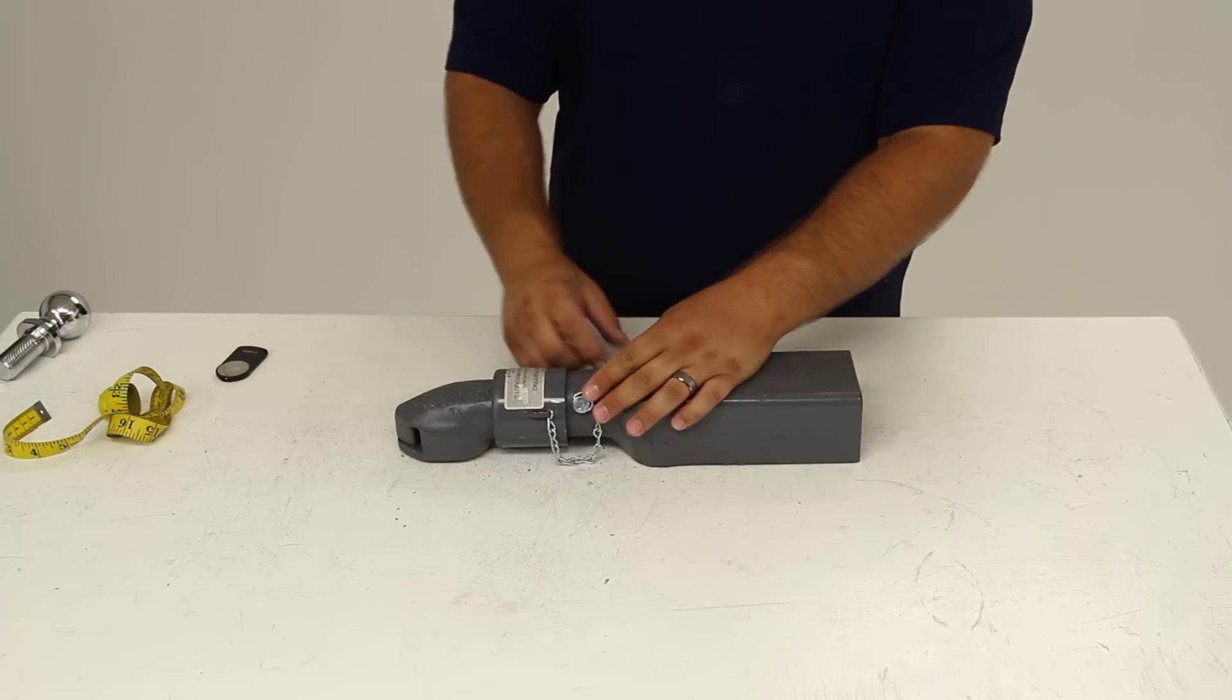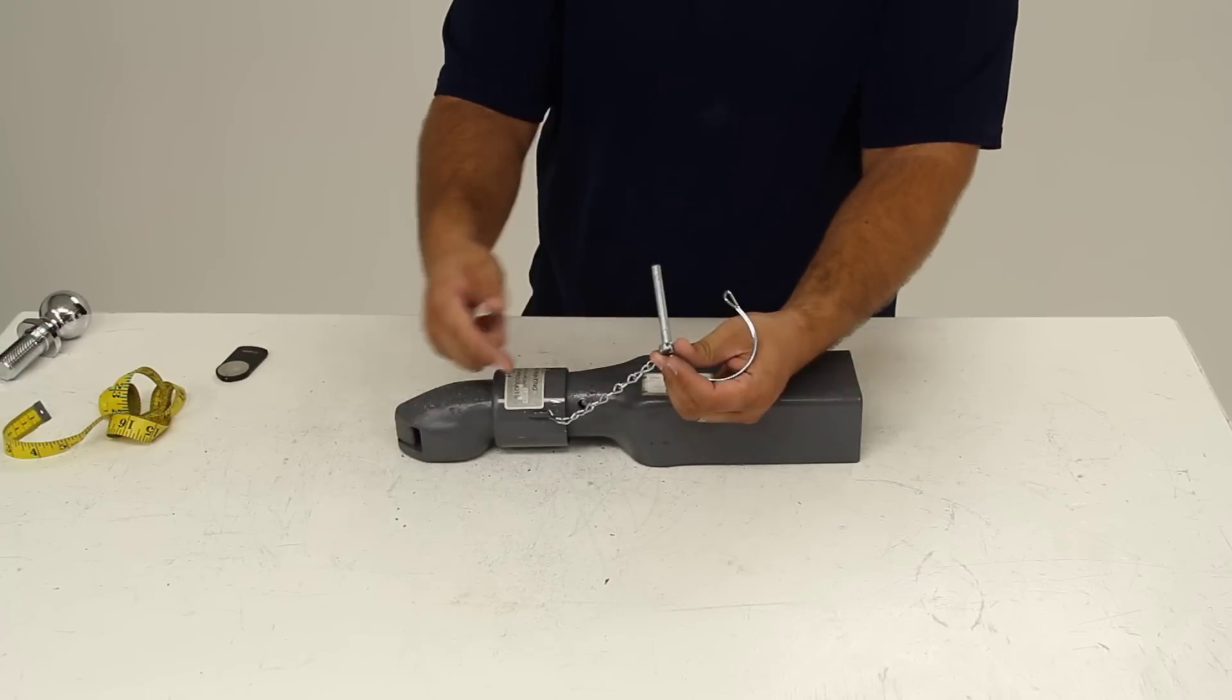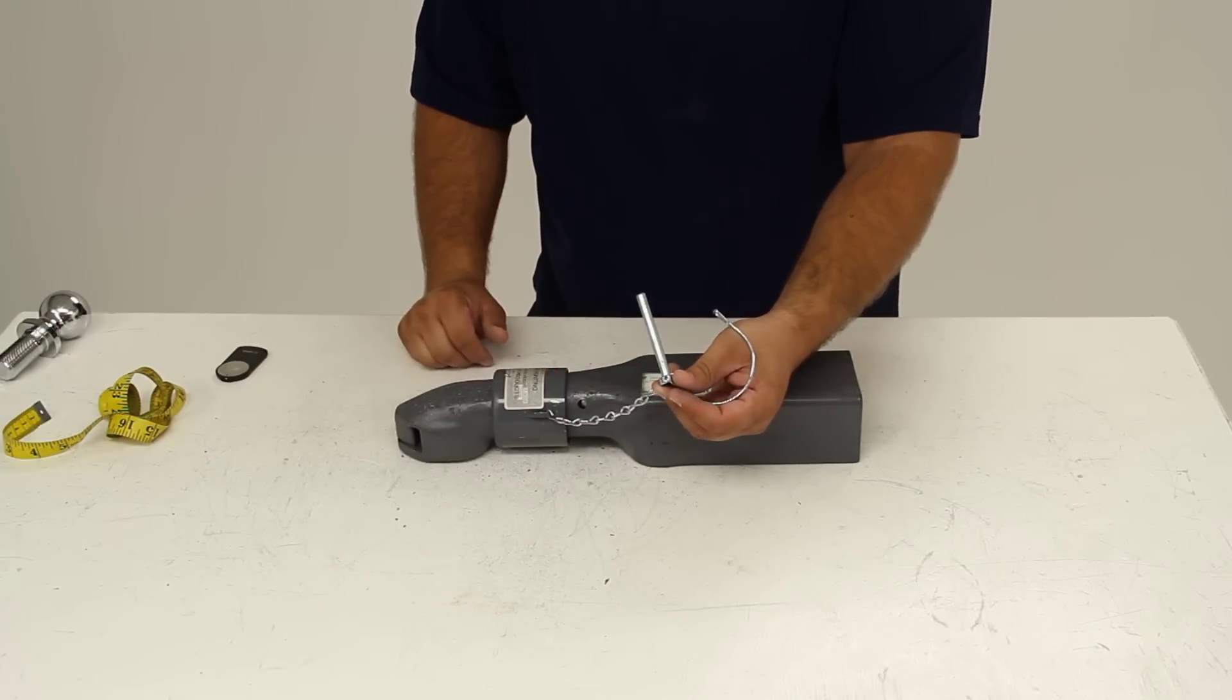To be able to release it, the collar needs to slide back far enough, so we need to remove our pin first. They've secured the pin to the coupler with a chain lanyard to make sure you don't lose it.